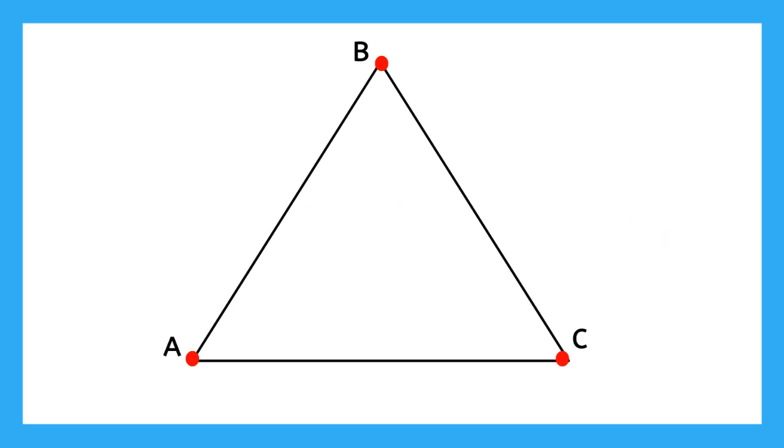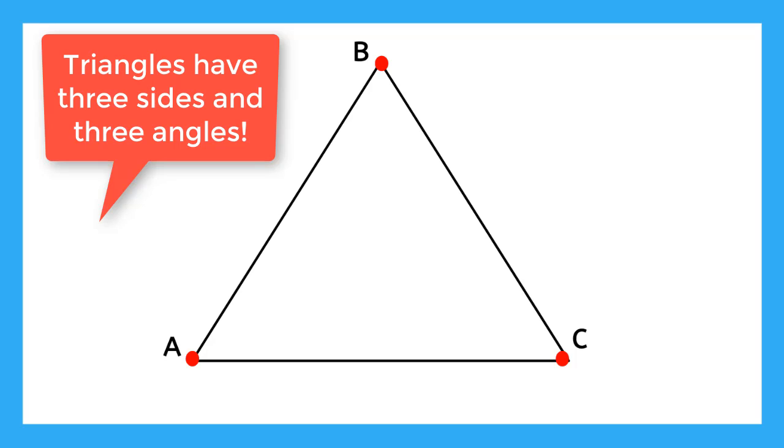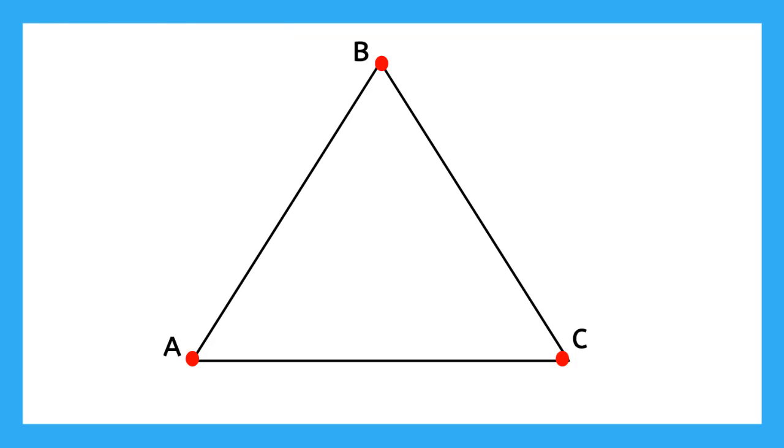A triangle is a shape with three sides and three angles. We can name our angles angle BAC, angle ABC, and angle ACB. And it is made up of three line segments, which we can name AB, BC, and AC.